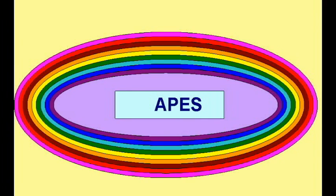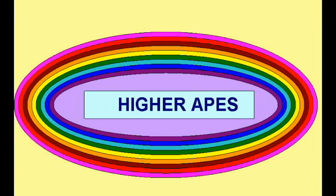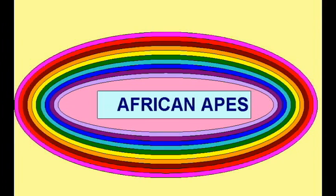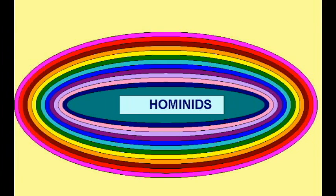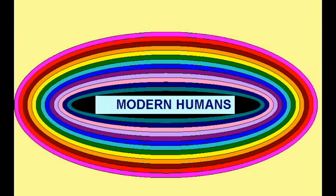One group of catarines modified their tail inside their pelvis, and became known as apes. One group of apes became larger, and are known as the higher apes. Some higher apes diversified in Africa as African apes. One lineage of African apes would lead to chimps and humans. After diverging from the chimp lineage, one group would produce a variety of hominoid species, which would eventually produce a variety of human species, which would eventually produce modern humans, and you.